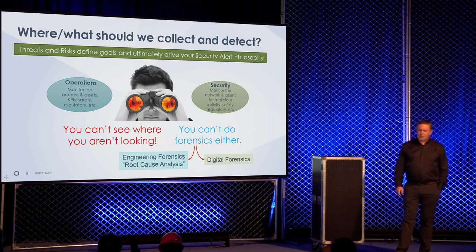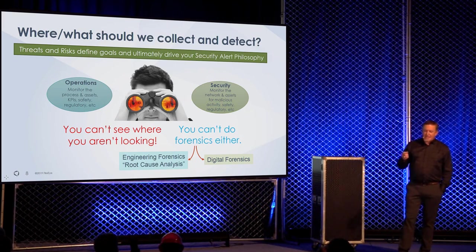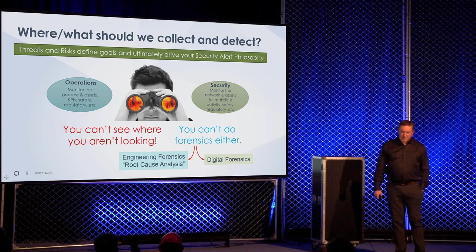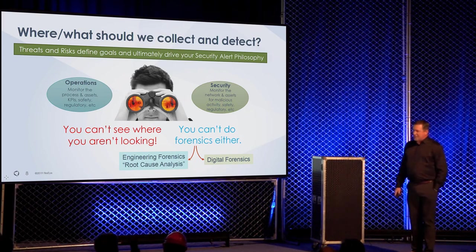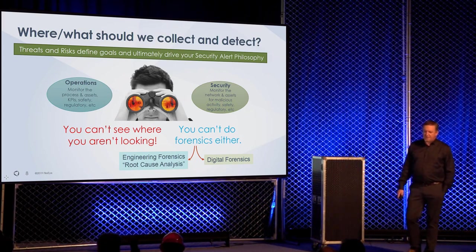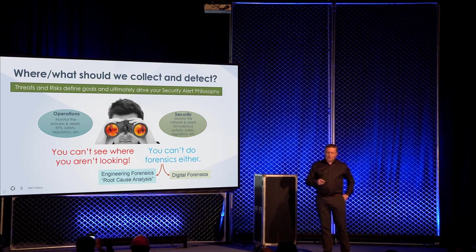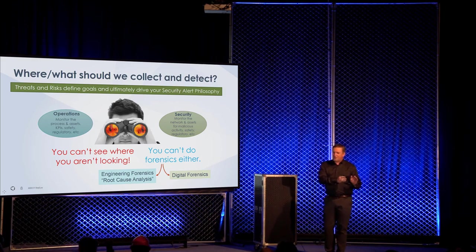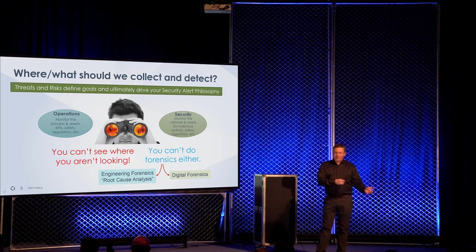Where should you collect and where should you detect? Threats and risks define the goals and drive your security alert philosophy. The key goal for operations is to monitor the process and assets — safety, regulatory, whatever KPIs you have. Security wants to monitor network and assets for malicious activity. You can't see where you aren't looking. When we do engineering forensics and root cause analysis, we have to rely on those alarm logs from the system to piece together what happened.